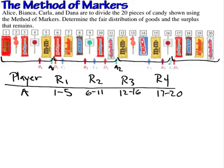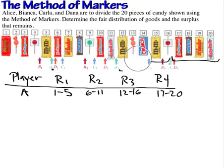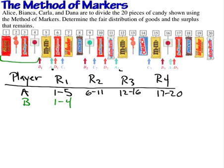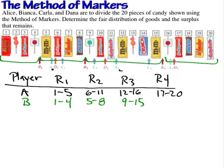The reason for these different groupings is that there are different flavors — maybe something the player is allergic to, doesn't like, or likes a lot. Now let's look at the fair shares for Bianca, Player B. Everything up to the first chip for Player B is items 1 through 4. The next marker includes items 5 to 8. The third marker covers items 9 to 15. And the fourth fair share is items 16 through 20.